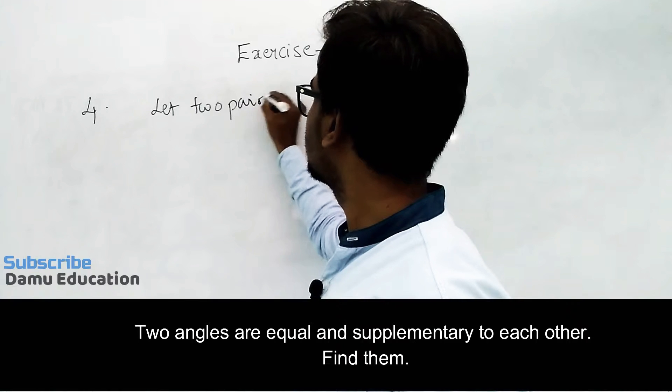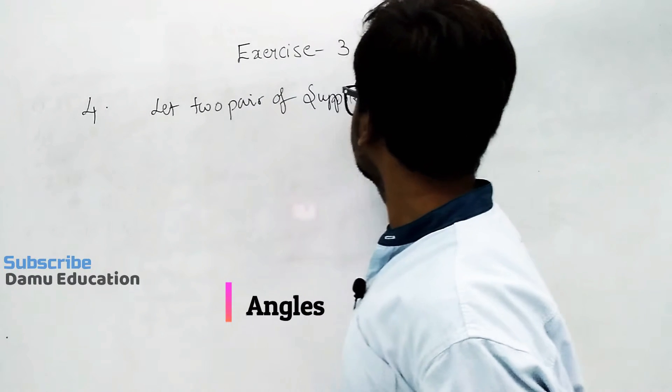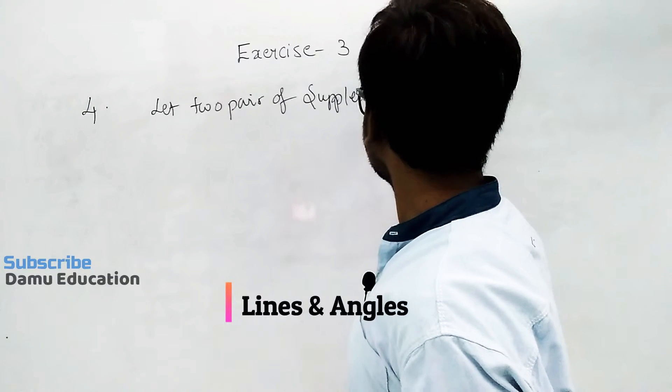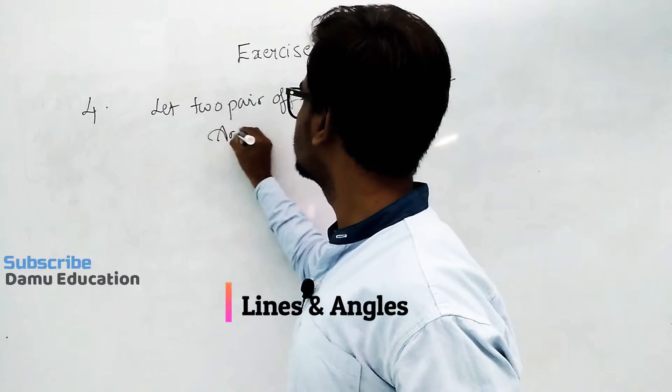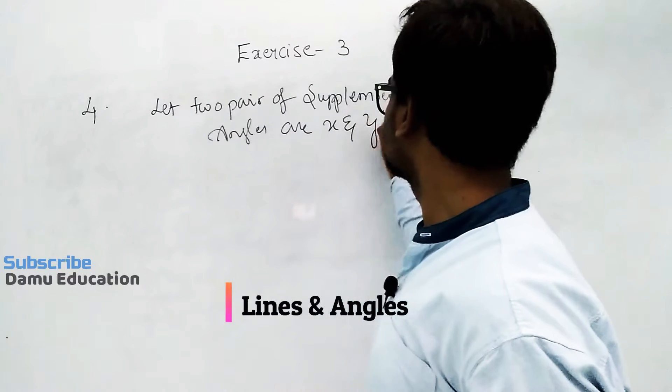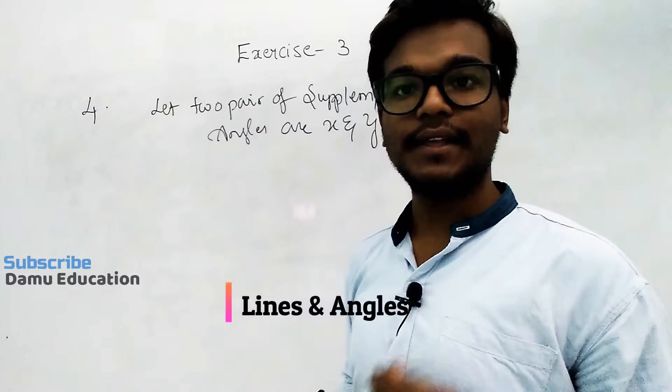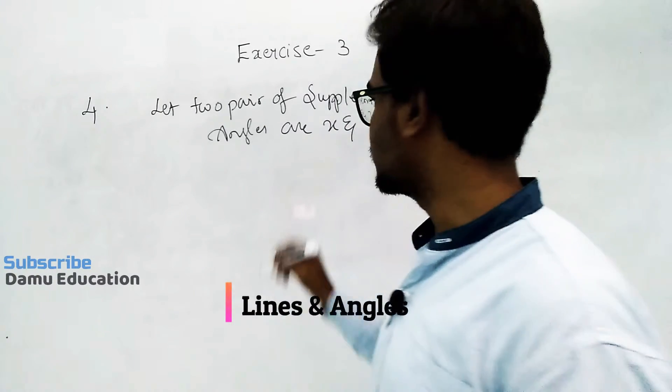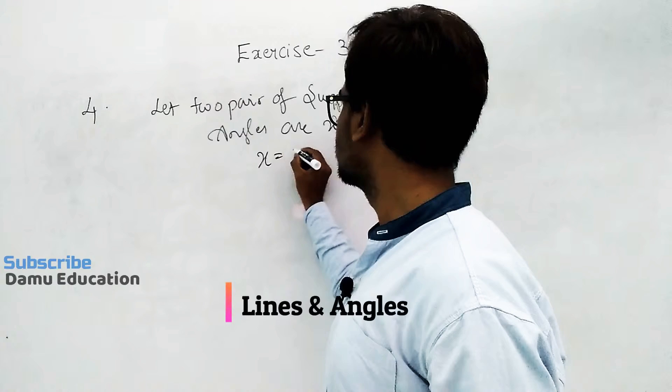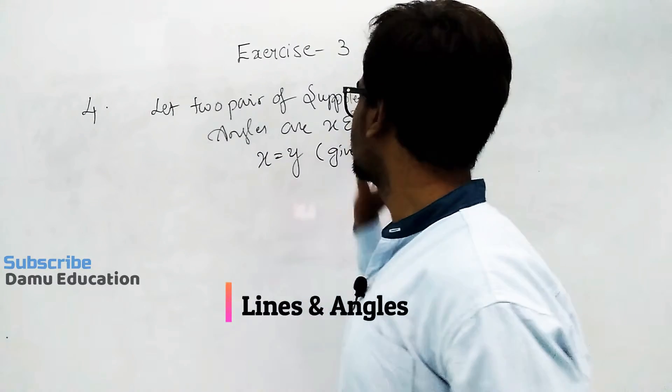Let two pairs of supplementary angles be x and y. What is x and y? As per the question, x and y are equal to each other, then x equals y, given.